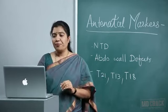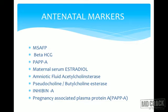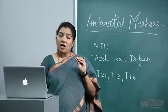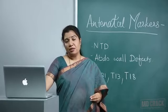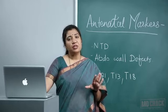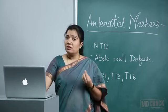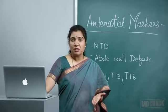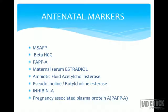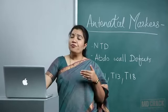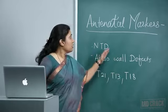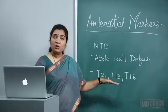The antenatal markers for screening include maternal serum alpha-fetoprotein (MSAFP) — an extremely important marker from an exam point of view, where you must remember every reason for its increase or decrease. Other markers include beta-hCG, PAPP-A, maternal serum estriol levels, amniotic fluid acetylcholinesterase, pseudocholinesterase (butylcholinesterase), and inhibin A. All these markers help indicate whether the fetus has common structural or chromosomal defects.